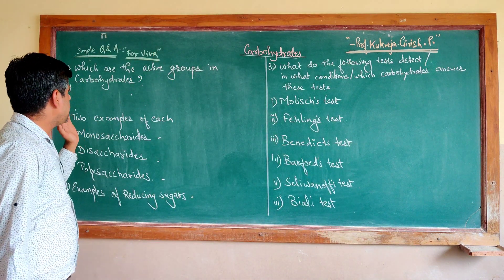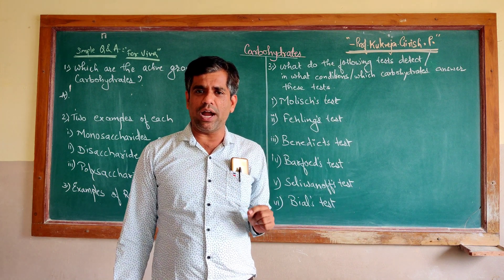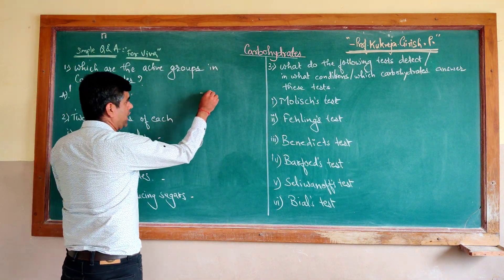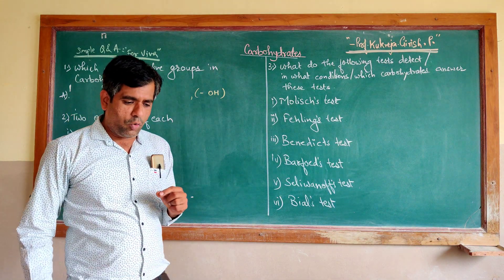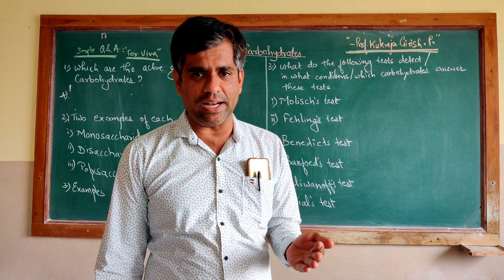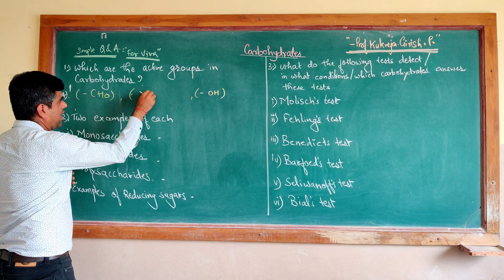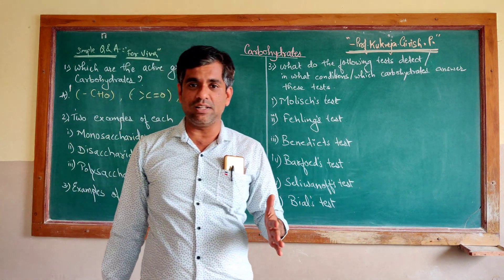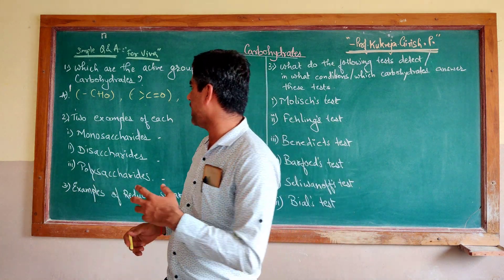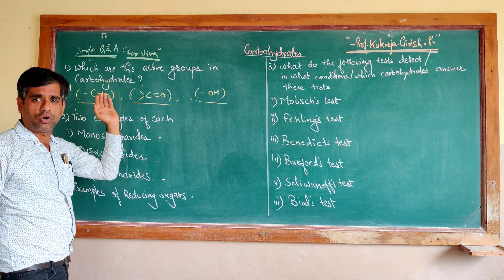The first question is: which are the active groups in carbohydrates? The answer is in the very definition of carbohydrates. Carbohydrates are defined as polyhydroxy aldehydes or polyhydroxy ketones. So the first active group is the hydroxyl group. What differentiates them is the aldehytic group — the CHO group — or the ketonic group, giving us the typical class of aldoses and ketoses. These are the active groups in carbohydrates.